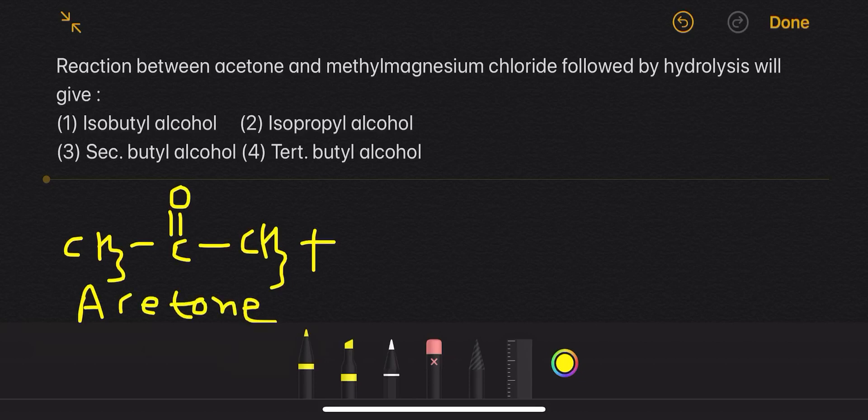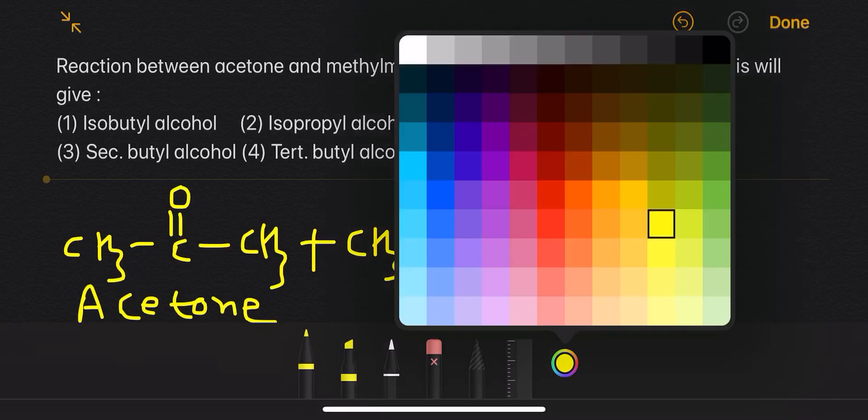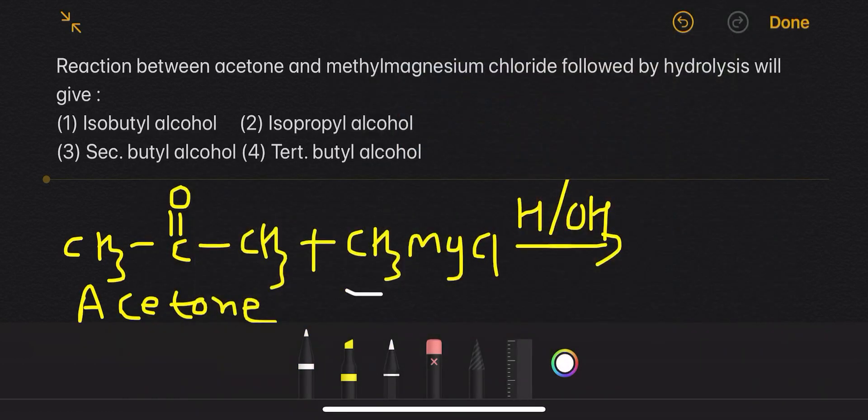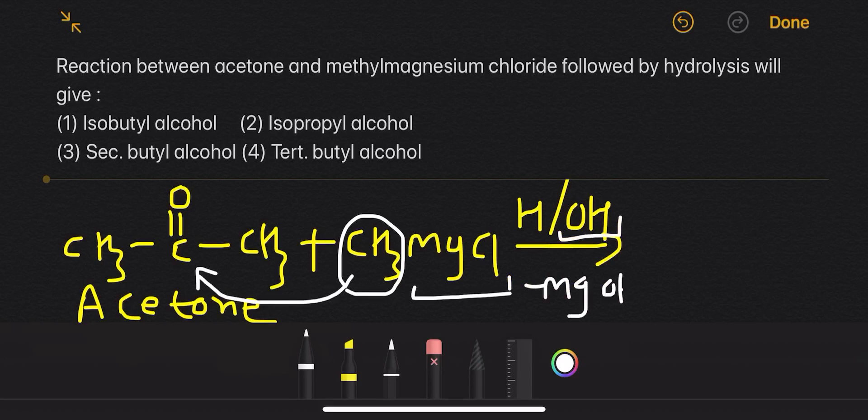When acetone is reacted with methyl magnesium chloride in the presence of H2O, H+, and OH-, the CH3 group will attack the electropositive carbon. MgCl will be removed with OH, forming Mg(OH)Cl.